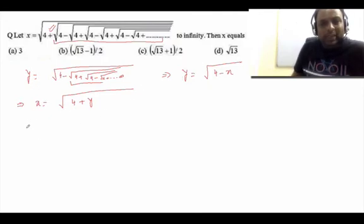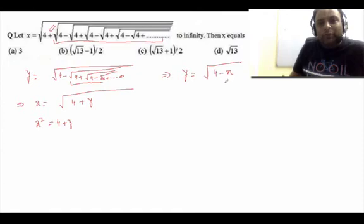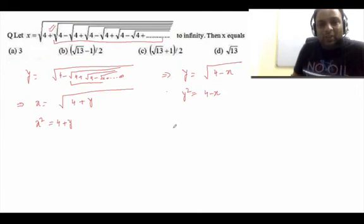Now take the square of both. From x = √(4 + y), squaring gives x² = 4 + y. And from y = √(4 − x), squaring gives y² = 4 − x.